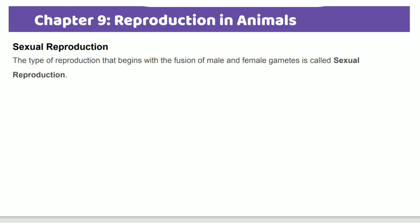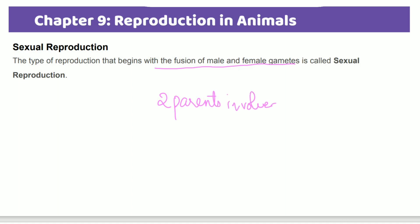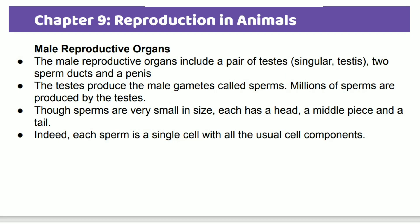What is sexual reproduction? In sexual reproduction, there is a fusion between male and female gametes, and two parents are involved — one is male and the second one is female.